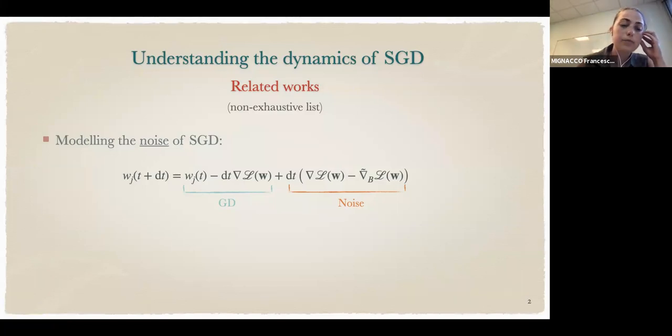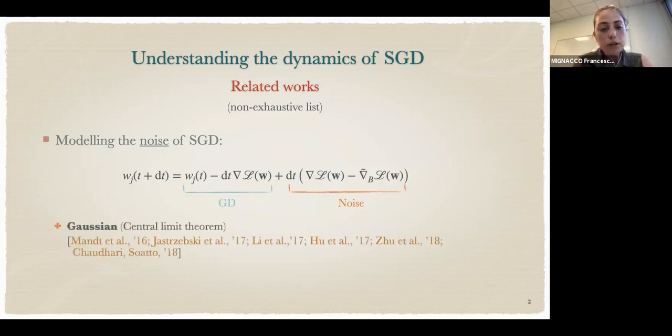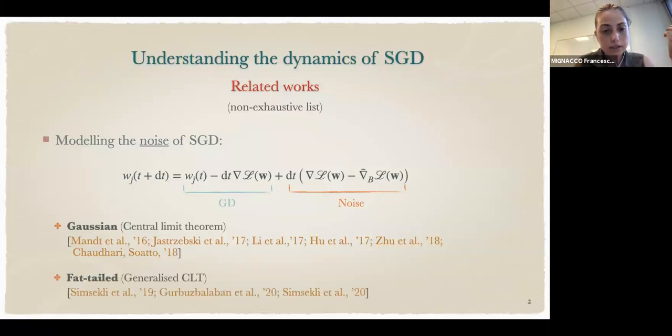First, I will overview some related works. There are a series of works that try to describe the dynamics of stochastic gradient descent, seeing the algorithm as a noisy approximation of gradient descent. The first series models the noise as Gaussian, invoking the central limit theorem. This assumption is questioned in another series of works where authors observe numerically that in some tasks the noise looks heavy-tailed, and so invoke a generalized version of the central limit theorem.